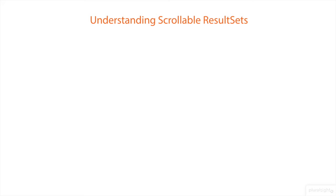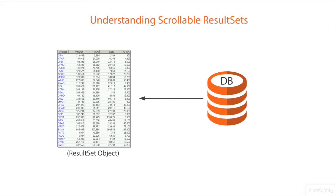We have observed earlier that from some databases like Oracle, the data can be read by default in forward-only direction. So in order to navigate efficiently, we need to understand the scrollable result set. We know that whenever the data has been loaded to the result set object, the cursor will be pointing above the first row.